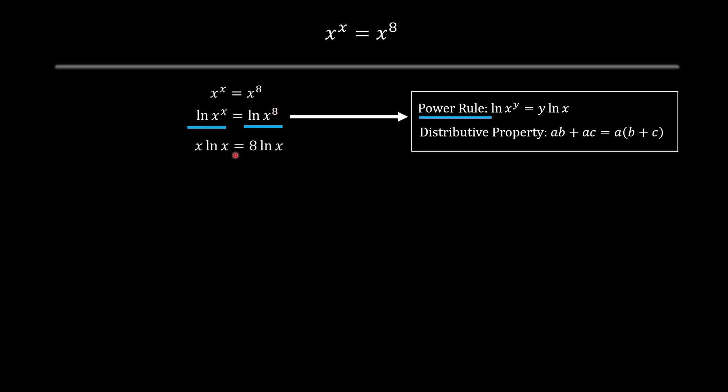So we do that, we acquire this, we move this 8 ln x to the other side, then we apply a distributive property over here where we take that ln x and bring it outside, so we acquire this and now we can solve.